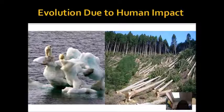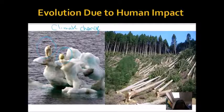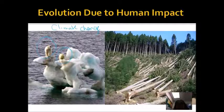With our polar bears, we see that the ice is melting due to climate change. Polar bears are becoming better swimmers because they get onto icebergs that break off from the glacier, float away, and then start to melt. Some polar bears are able to swim back home, while others will not make the swim. So it's a beneficial adaptation to be able to swim, and we're seeing the ability to swim increasing in polar bear populations.